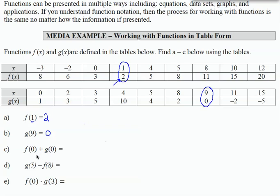Part c, f of 0 plus g of 0. So now I'm adding two values, two outputs. The output that goes with an input of 0 in function f. So here's my ordered pair for that part. The output is 3 for f of 0.